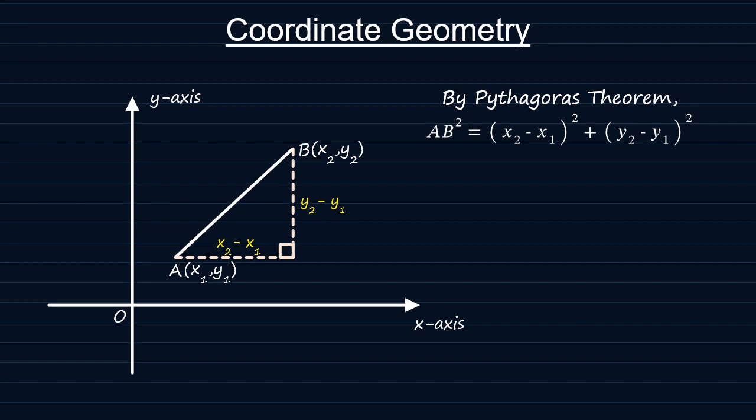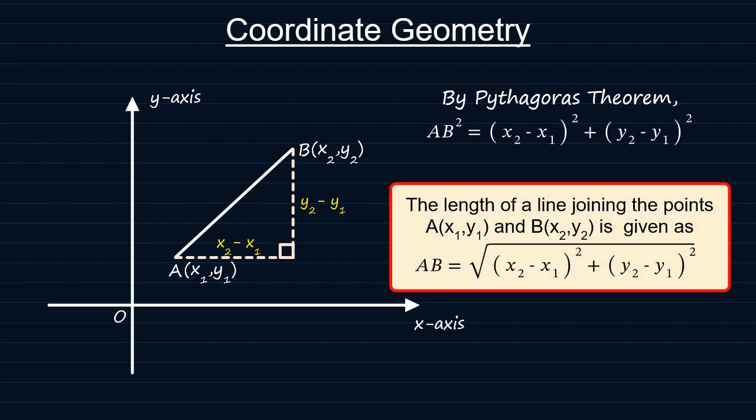Therefore, the length of the line AB is equal to the square root of x2 minus x1 squared plus y2 minus y1 squared. This is how we find the length of a line joining two points.